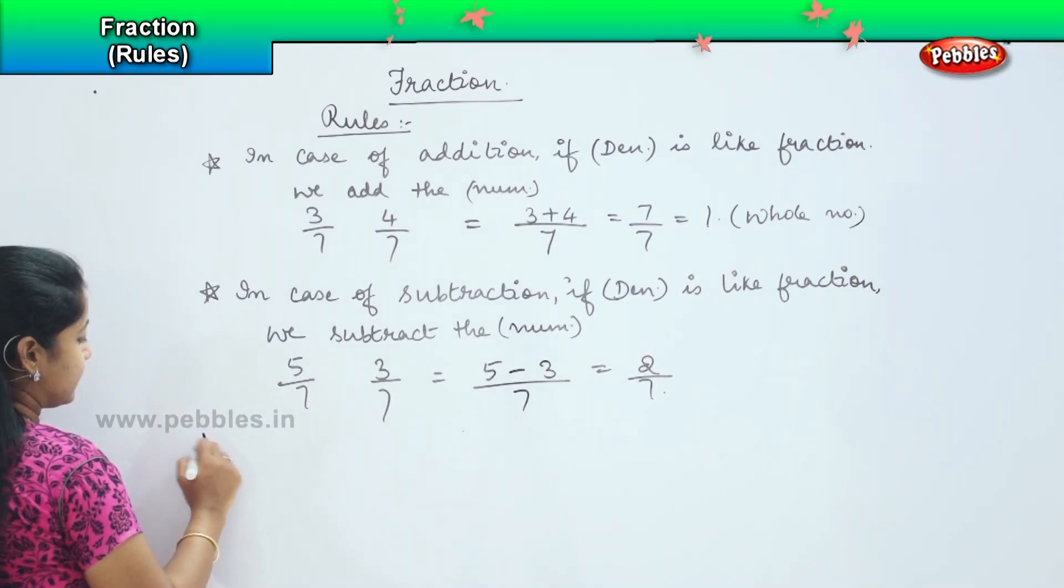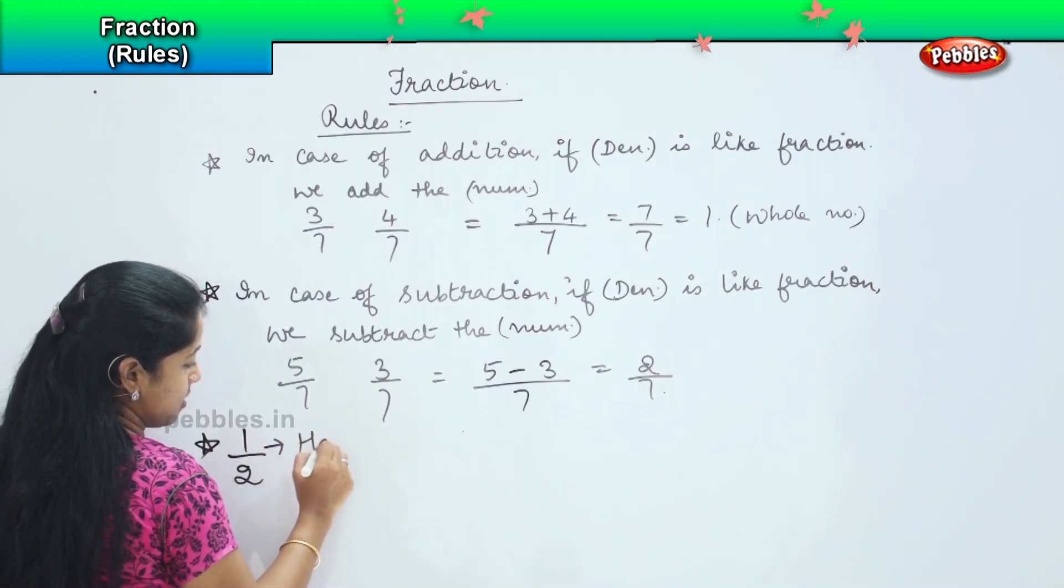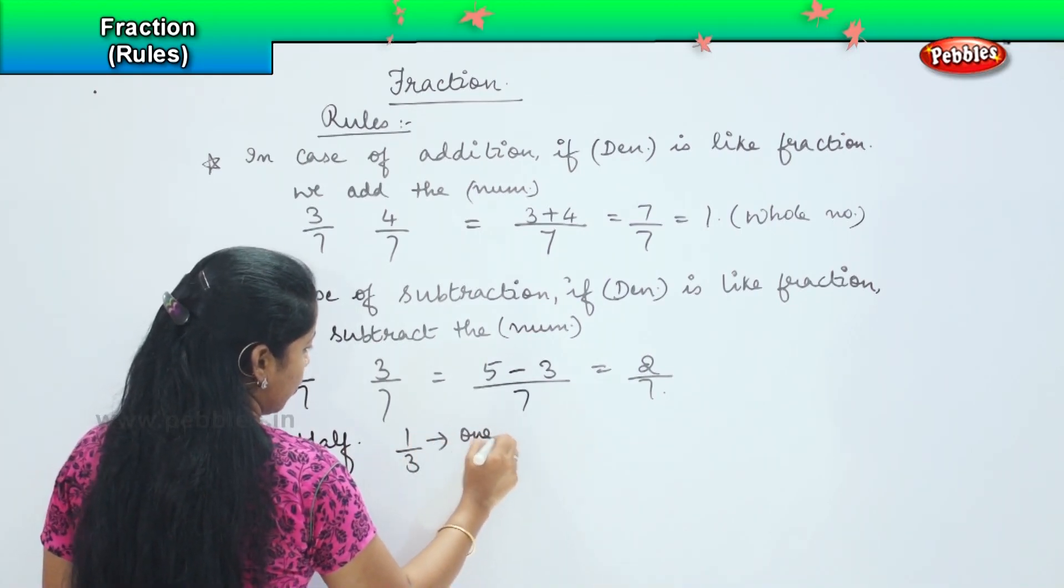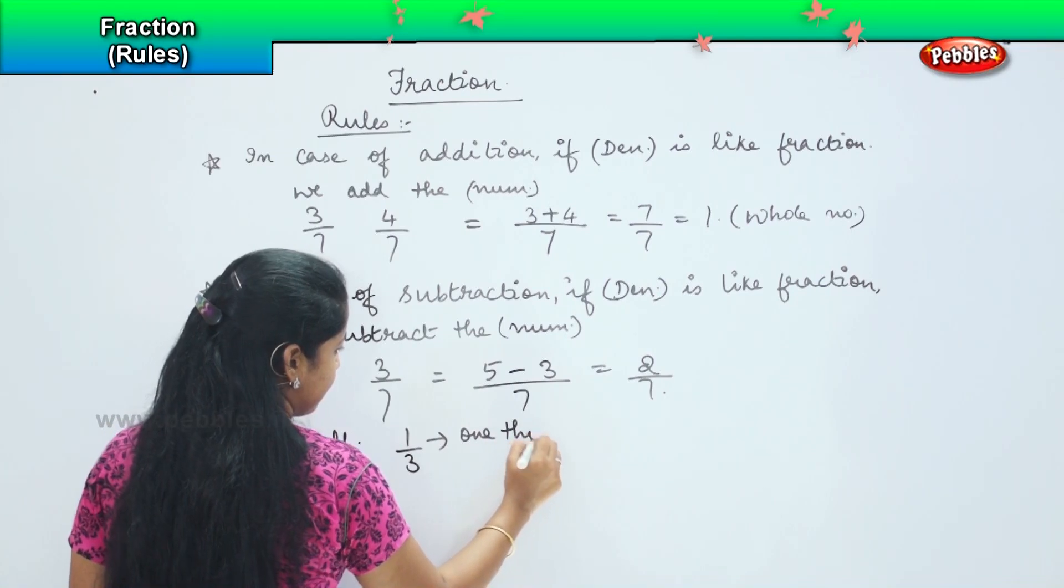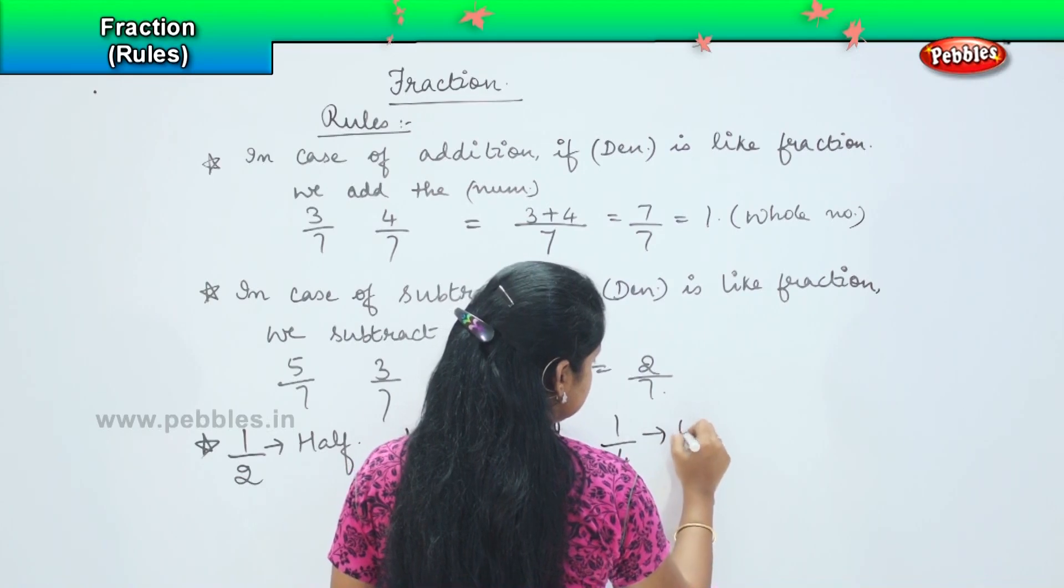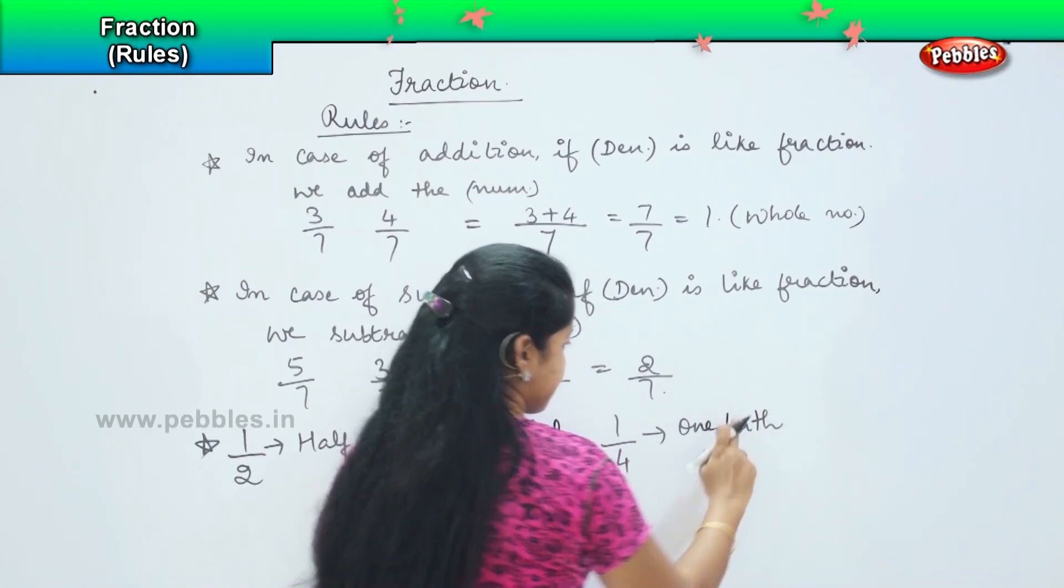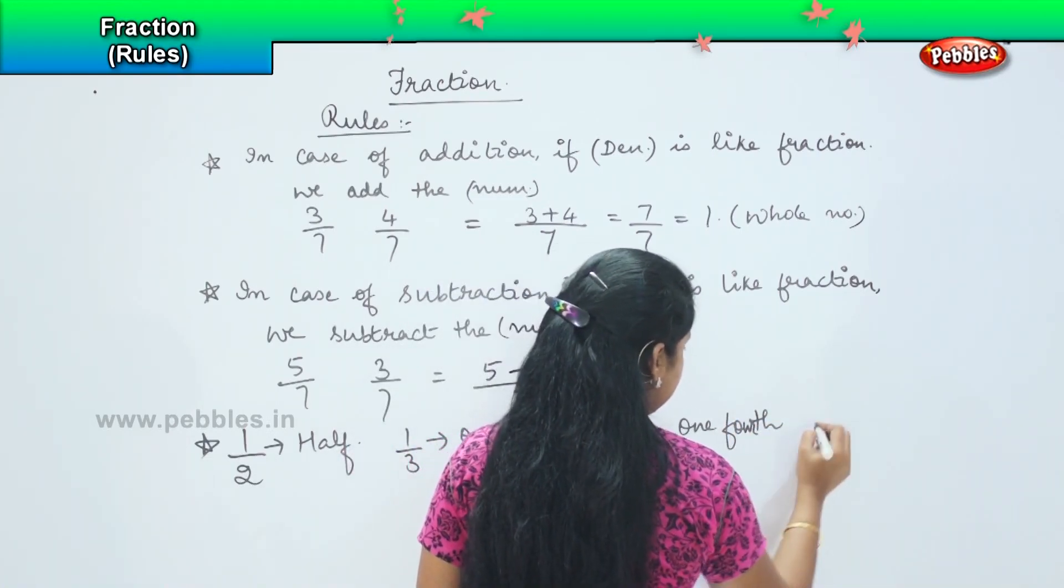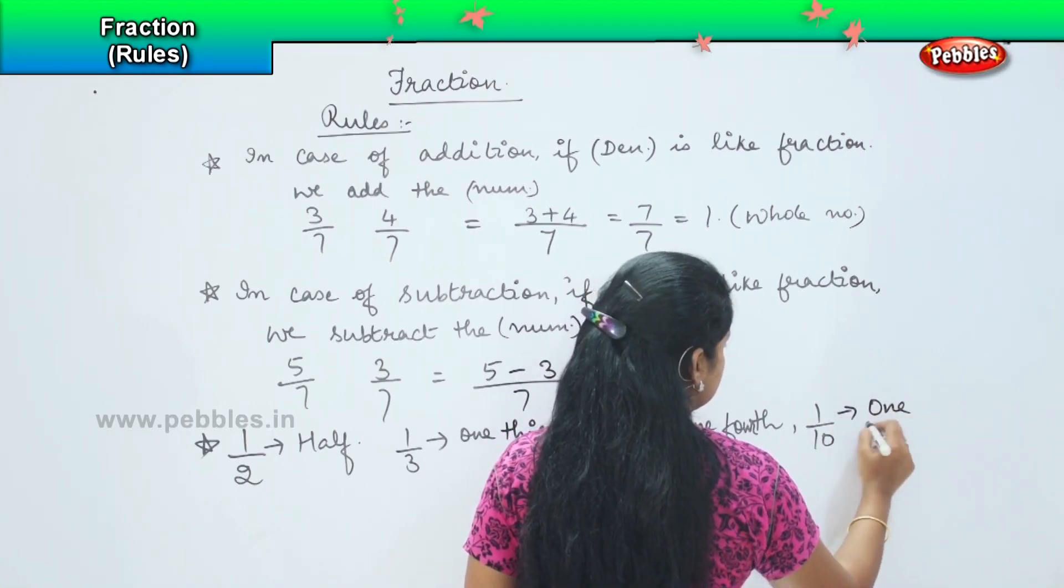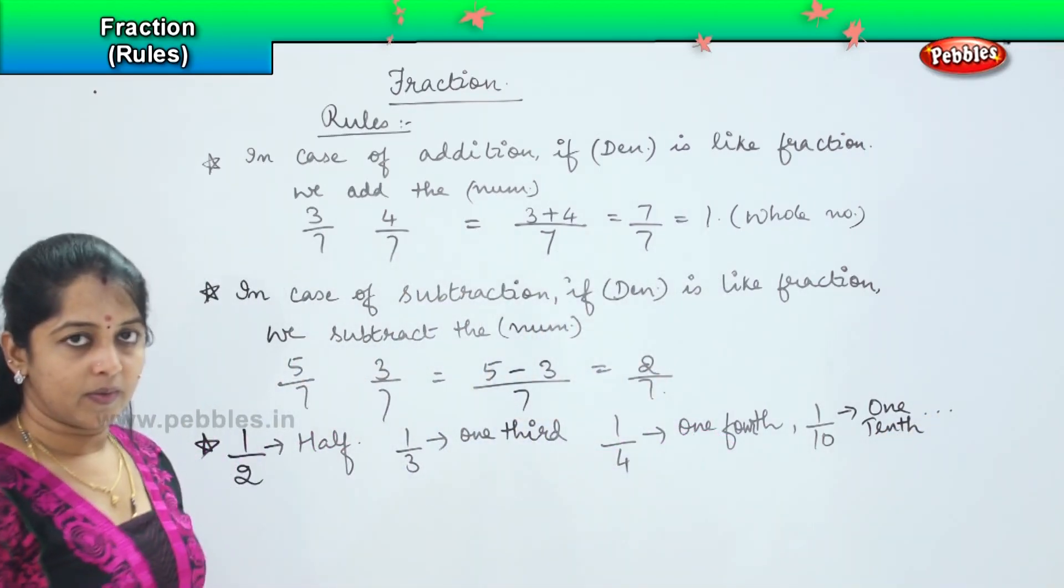So now the next thing which we know: 1 by 2 is called as half, 1 by 3 is called as one third, 1 by 4 as one fourth, 1 by 10 as one tenth and so on. Right?